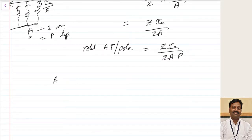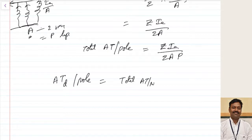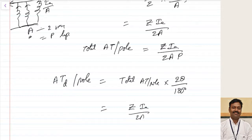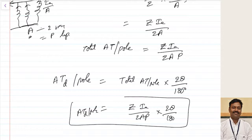Now let us calculate the demagnetizing ampere-turns per pole, AtD. This equals the total ampere-turns per pole multiplied by the angle they cover, which is 2θ out of 180 degrees. So AtD per pole = ZIa/(2AP) × (2θ/180°). This is the demagnetizing ampere-turns per pole.